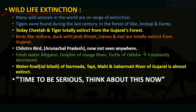We do not have that many tigers in our Gujarat forest right now. Birds like vulture, duck with a pink throat, cranes are totally extinct from Gujarat. The vulture eats dead animals or even dead bodies of humans. Otter is also not found in Gujarat. The Chilatra bird, mostly found in Arunachal Pradesh, is now not seen anywhere. Freshwater alligator, dolphin of the Ganga River, and turtle of Odisha are constantly decreasing due to global warming, and we cannot reproduce or reprocure them.